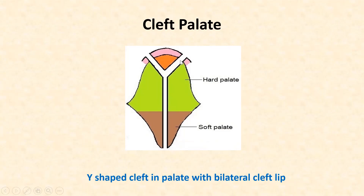Cleft palate is associated with cleft lip because the development of both the anterior part of the palate and the lip occurs by fusion of the frontonasal process with the maxillary process. So clefts extending to the anterior end of the palate are associated with cleft lip, as both the upper lip and palate are formed by fusion of the maxillary process with the frontonasal process.